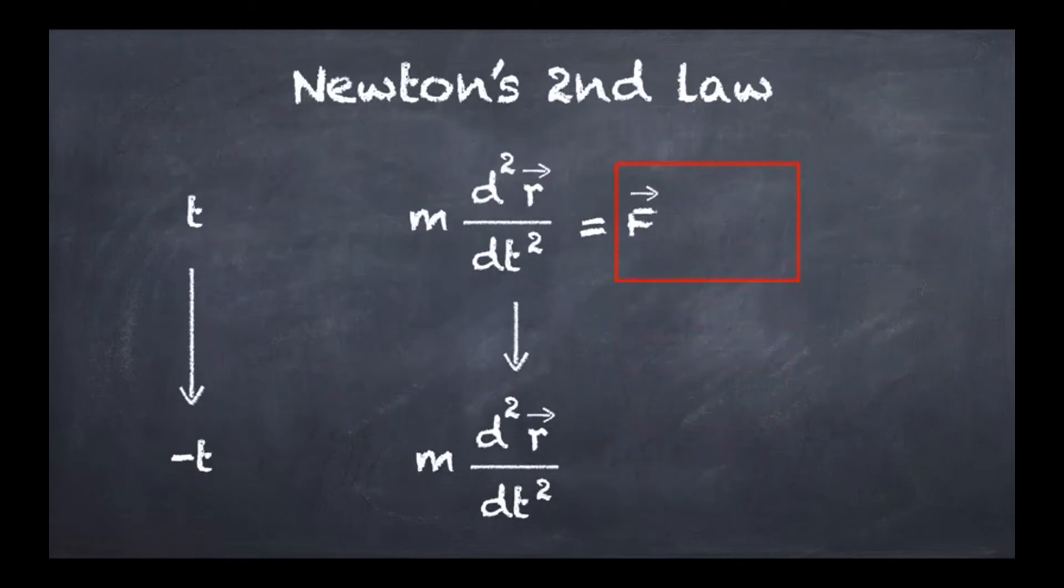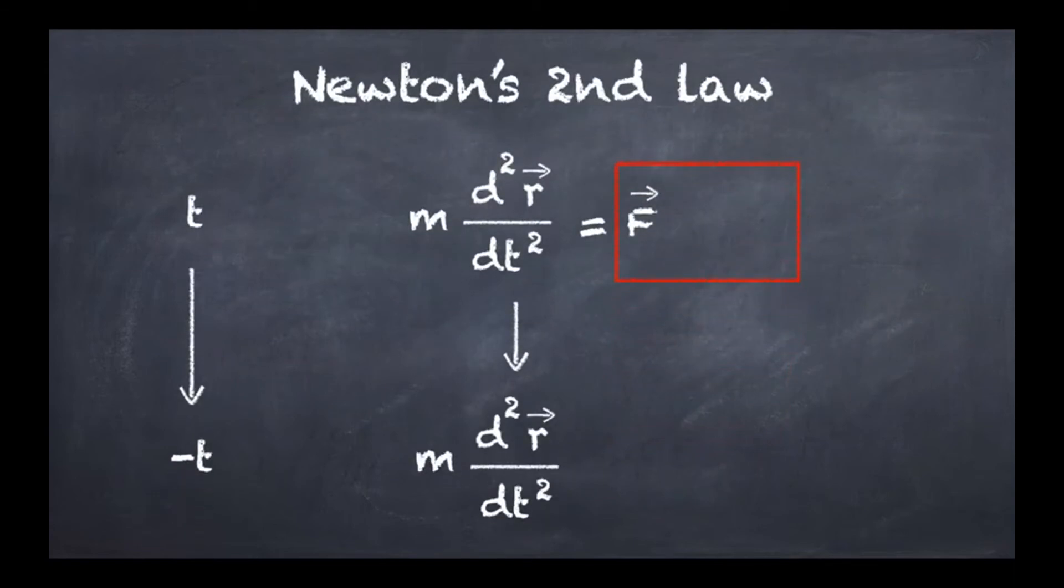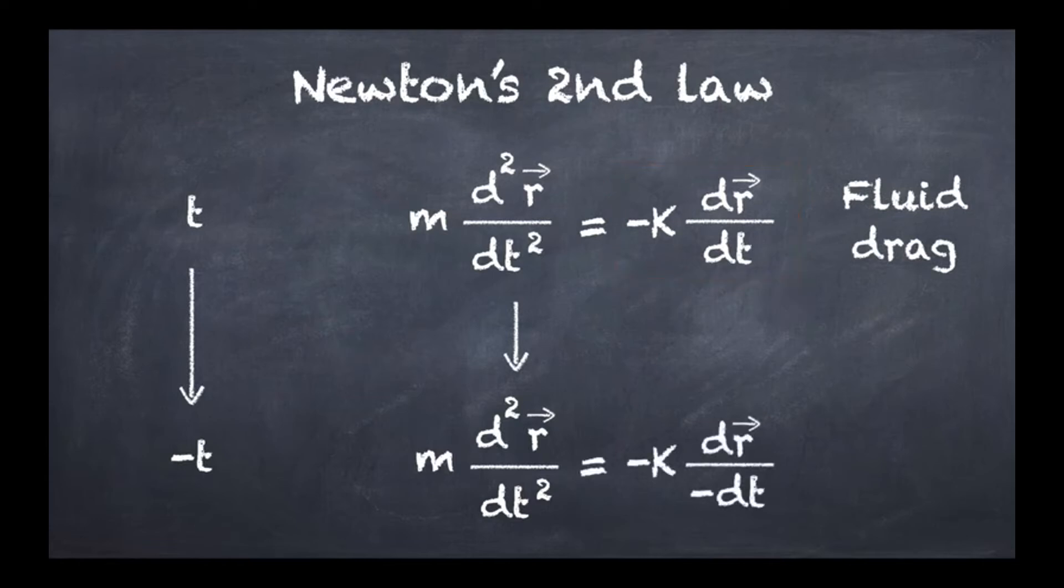Let's look at some other forces. For example, let's take the case of fluid drag. If you have an object moving into a fluid and it's not moving too fast, it's going to have a force which is opposite in direction to the velocity of the object. That's minus k times dr/dt, where k is a proportionality factor called the drag coefficient. If I check how this is going to change upon inverting t, I get minus k times dr over minus dt.